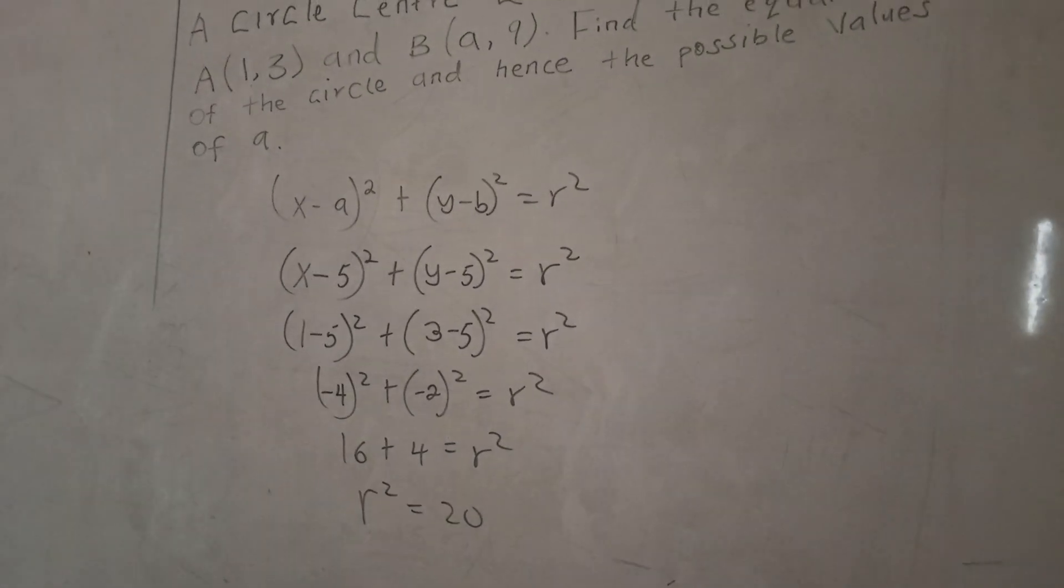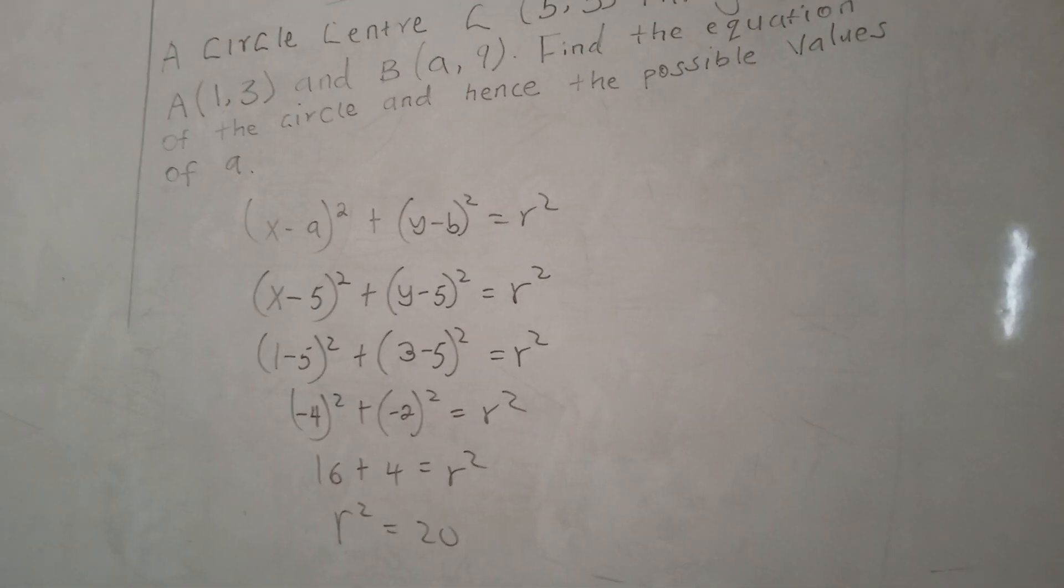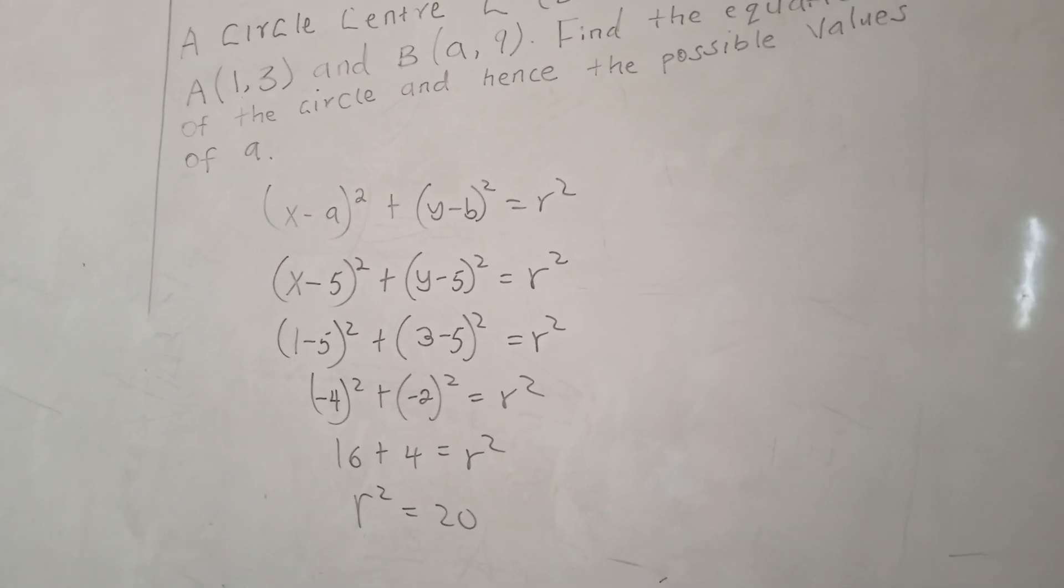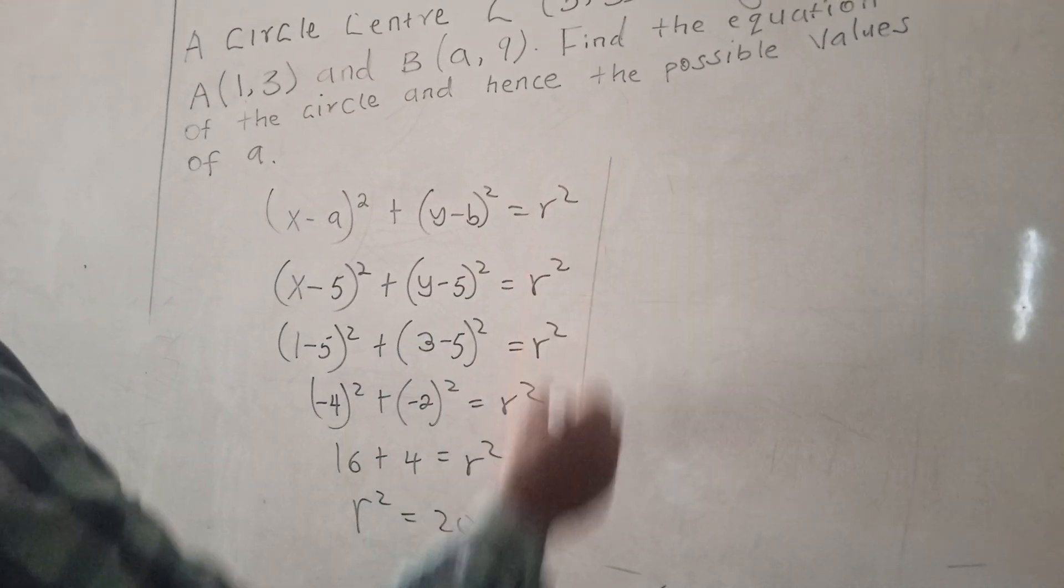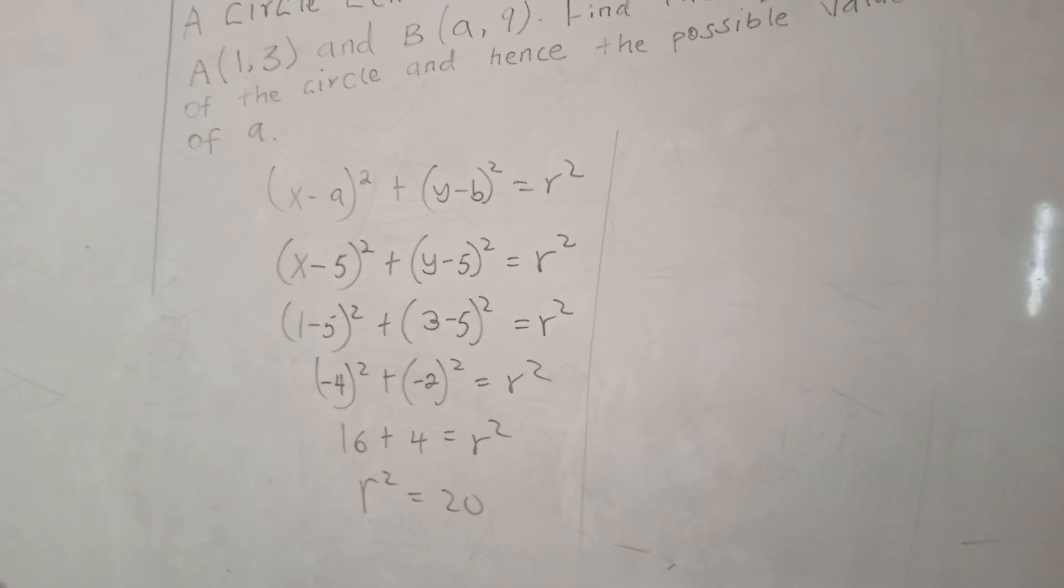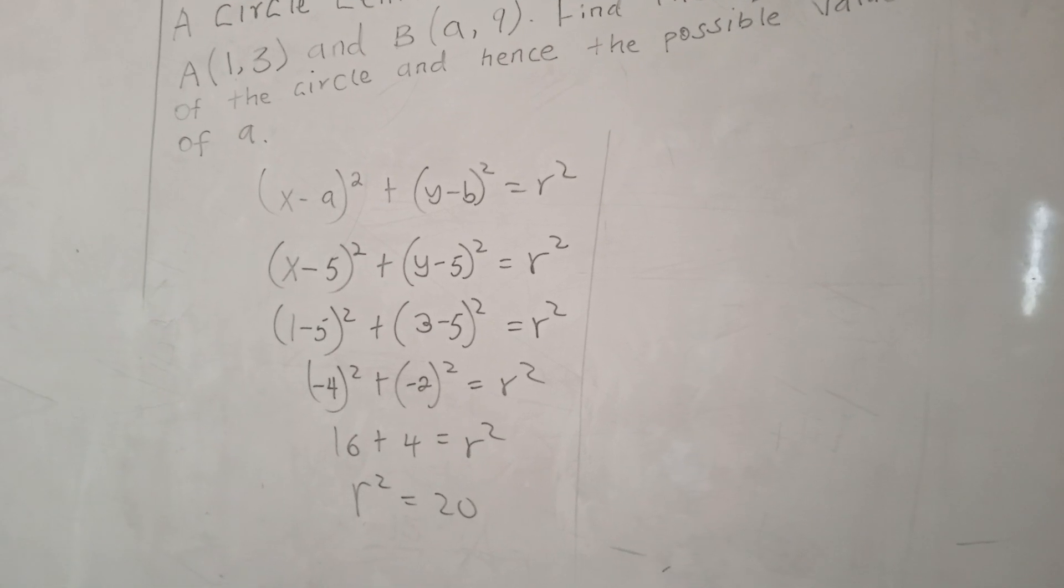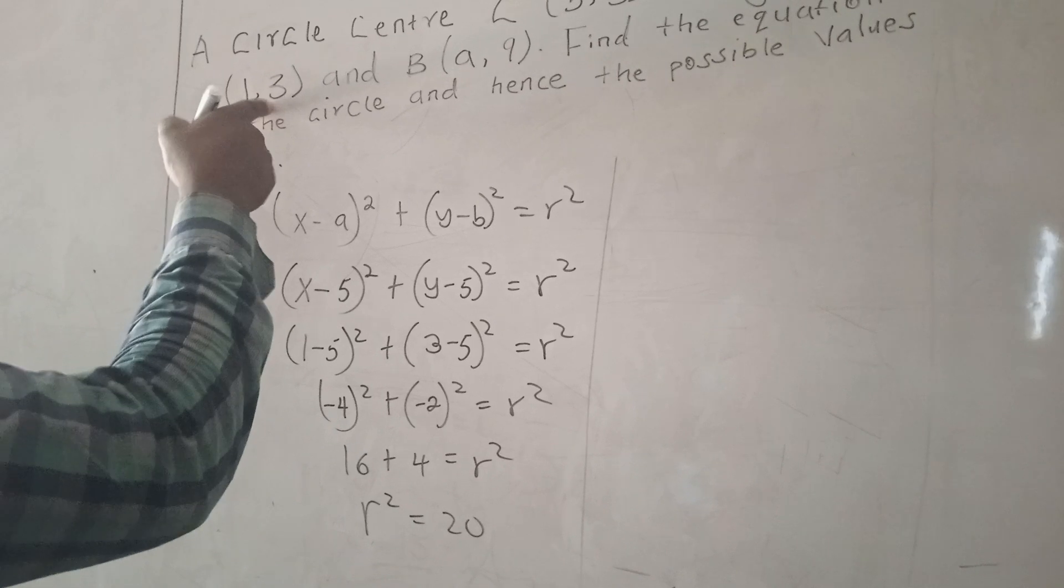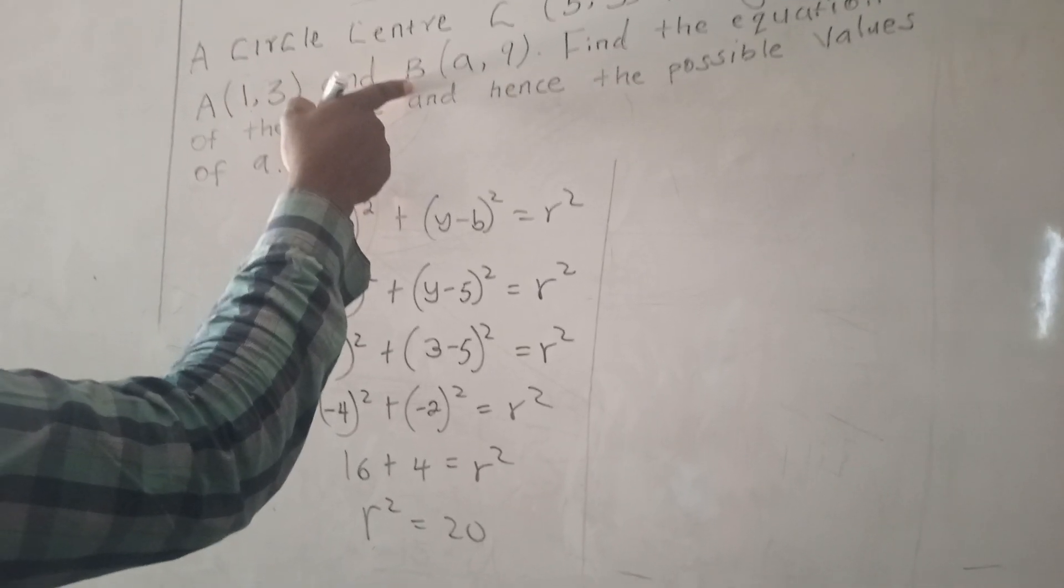Now that we have the radius squared, we can rewrite the equation of a circle and actually get the value of a in this case. This time around we are not going to use point A, we are going to use point B now.